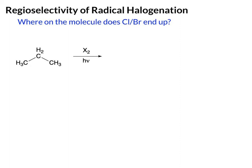In this molecule, we have two distinct types of hydrogen. We have the methyl group, which is equivalent to this methyl group, and we have the CH2 group. So we have two possible products. If we halogenate at this carbon, we get this product here. Or if we halogenate at the CH2 carbon, we get this other product.